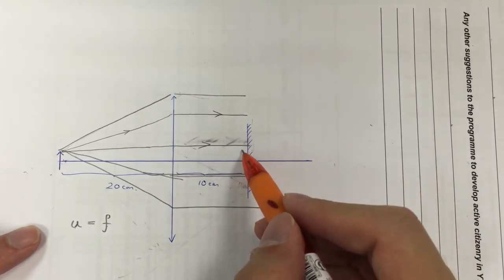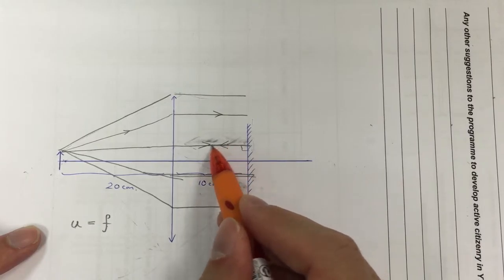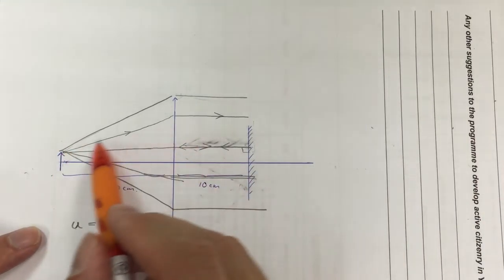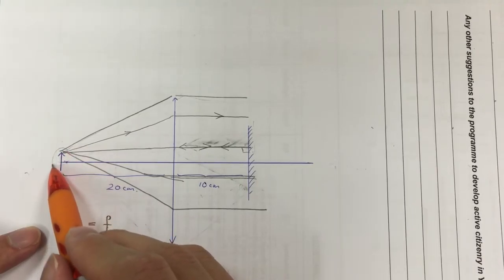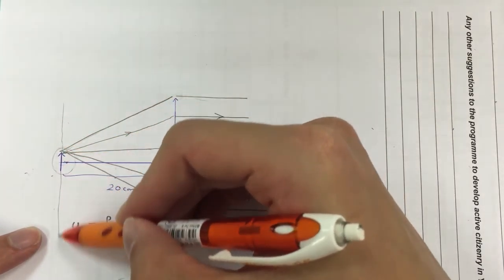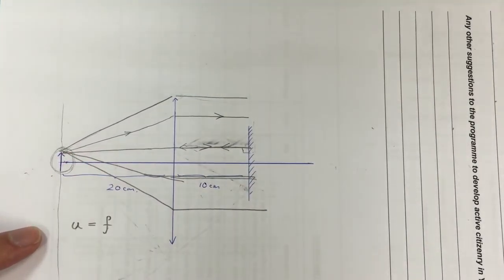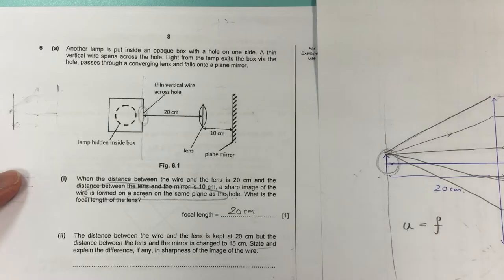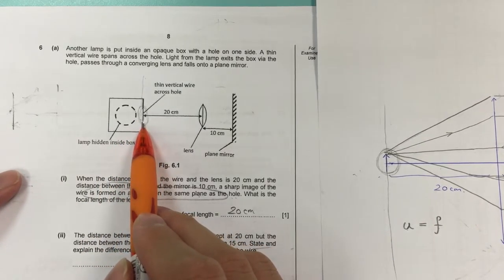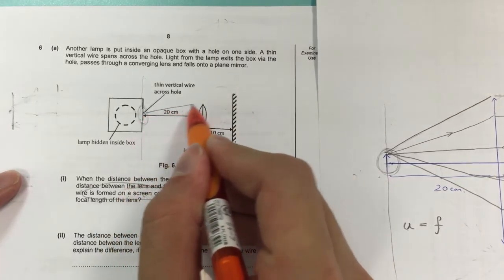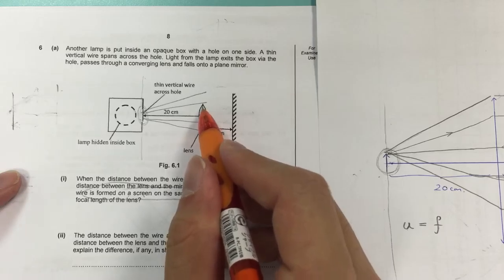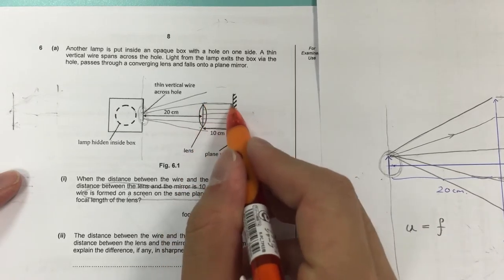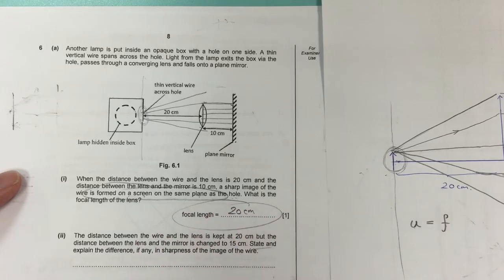Because it becomes a parallel ray, it will hit the mirror at 90 degrees. After hitting the mirror it gets reflected, and the light ray goes back the way it came. By reversibility of light, it returns back to the object, so the sharp image forms on the same plane as the object at exactly where the object is. Because of that, you can confirm that the focal length is 20 cm — only when the object is at the focal point will the emitted rays become parallel, hit the mirror at 90 degrees, and bounce back.